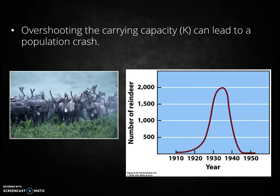An interesting example of where carrying capacity declined abruptly is the scenario that occurred in the Pribilof Islands of Alaska. In 1910, 26 reindeer were introduced on the island. With no predators and ample resources, the population grew exponentially. Unfortunately, in this case the population did not simply level off at the carrying capacity. Rather, for years the reindeer overgrazed their environment, their food resources crashed, and so did the reindeer population. Overshooting the carrying capacity can sometimes lead to a population crash.